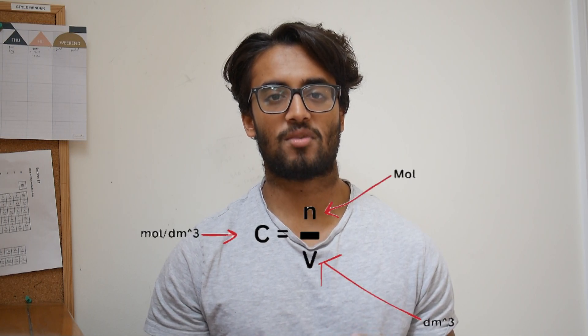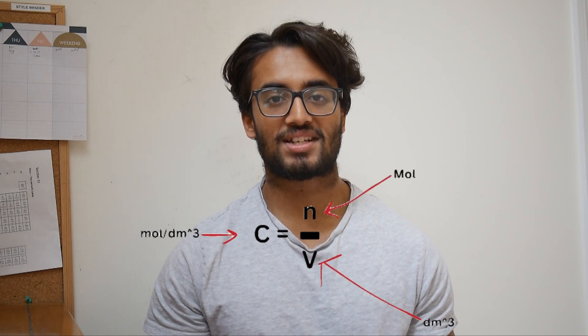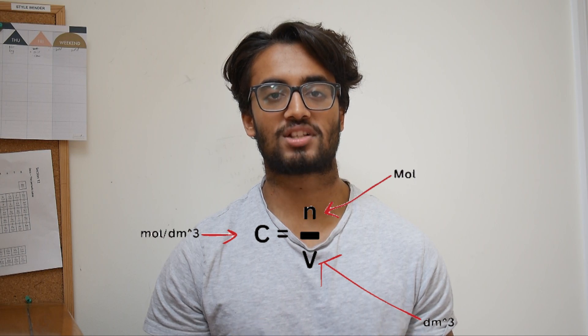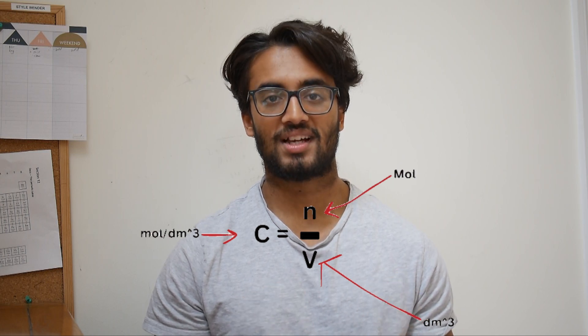A similar example: concentration equals the number of moles divided by volume, hence the units of concentration are moles per decimetre cubed. This is a much better way of thinking about formulae as opposed to just remembering the formula triangle, because it's a lot more intuitive and it avoids silly errors.